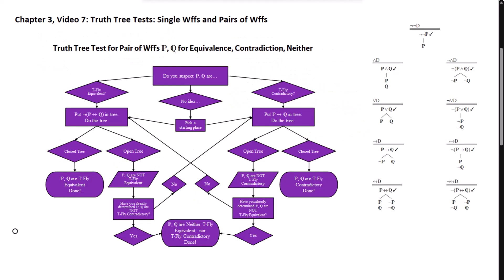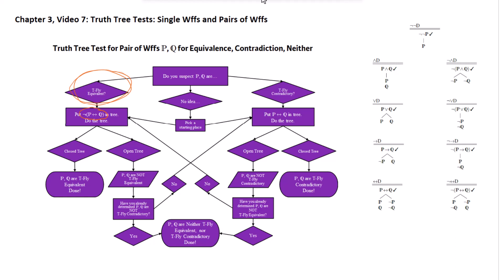Here we see the decision chart for testing pairs of formulas for equivalence, contradiction, or neither equivalent nor contradictory. It has the same shape as for individual formulas. If you have a suspicion that the two formulas are equivalent, you should test their negated biconditional, because if they are equivalent, their biconditional will always be true, meaning the negated biconditional is inconsistent and will cause a closed tree. If you think they are contradictory, then their biconditional can never be true, and so that would create a closed tree. If they are neither equivalent nor contradictory, you are going to get an open tree in either case, and you will need two trees to show that.